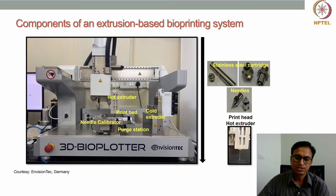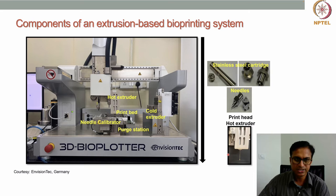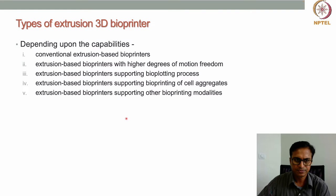Different diameters of nozzles are available, and when connected to the printer the nozzle extends out; when pressure is applied the material comes out. This is the 3D bioplotter from Envisiontec. These are the different components of an extrusion-based bioprinting system. Most extrusion-based bioprinters have similar components — maybe the attachment or geometry differs slightly, but the components are largely similar.